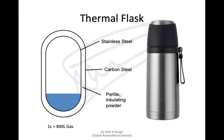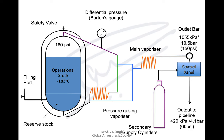The VIE is like a thermal flask — whatever you put in, if it is cold it remains cold. It consists of two layers separated by a vacuum. The outer part is made of carbon steel and the inner part of stainless steel. The vacuum between the two layers is filled with an insulating powder known as perlite. It is filled with liquid oxygen stored at minus 183 degrees Celsius, and the gaseous part is at a pressure of 180 psi.